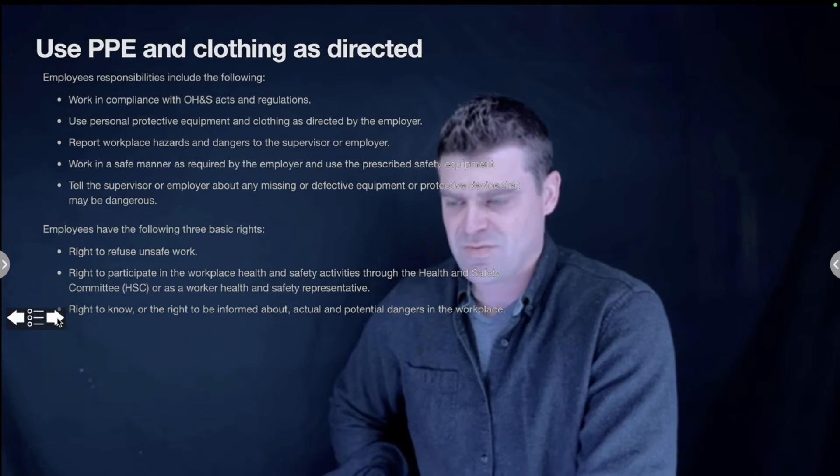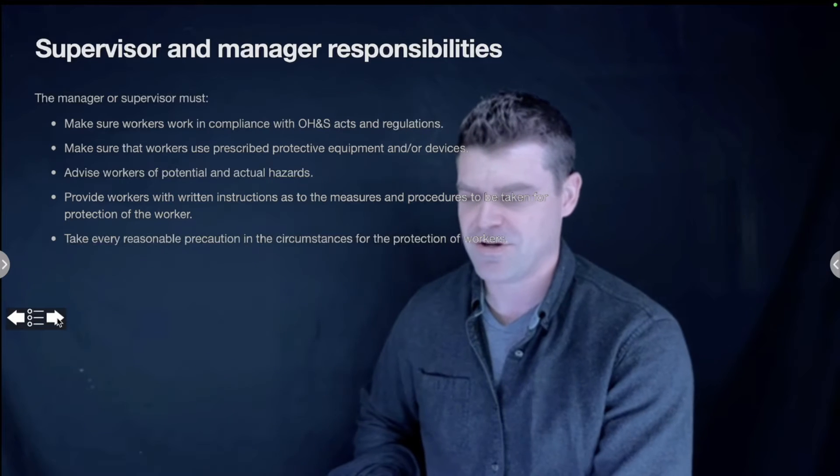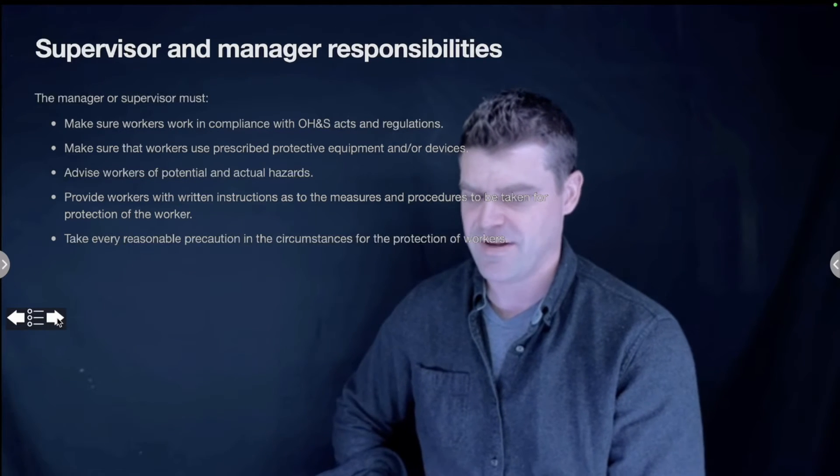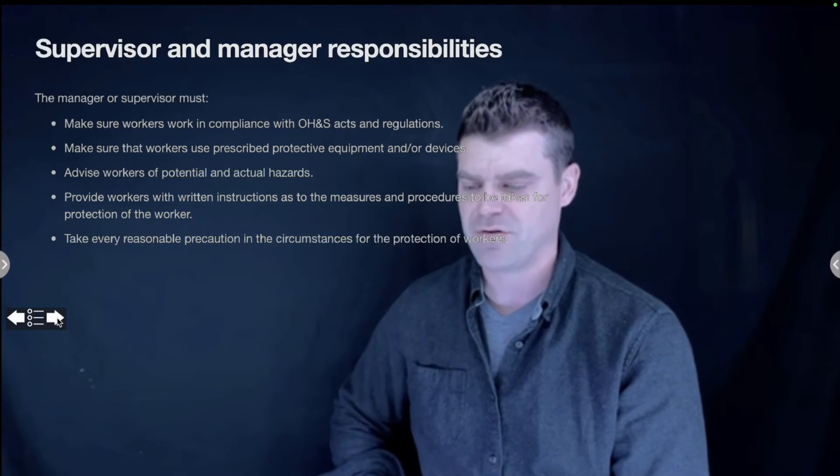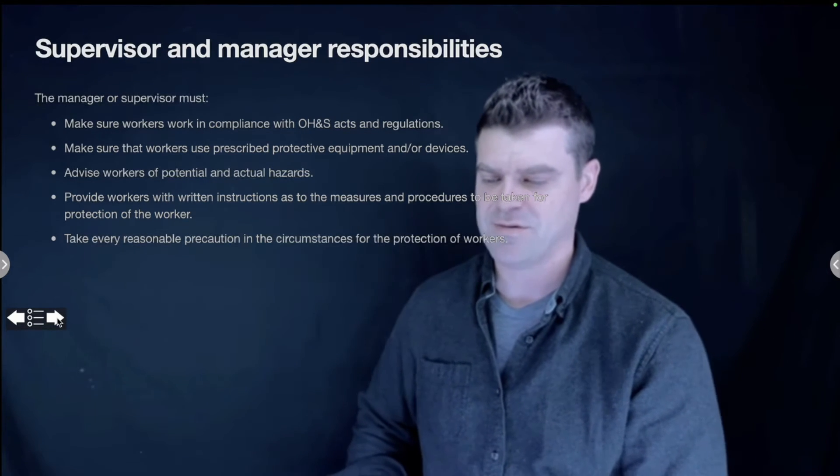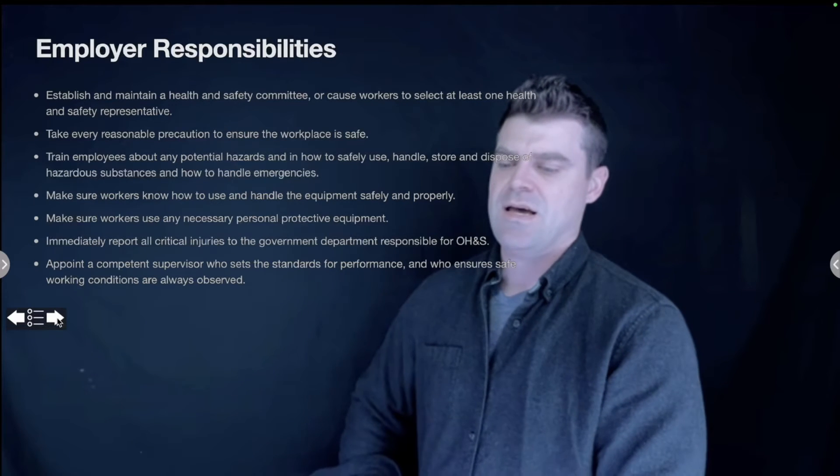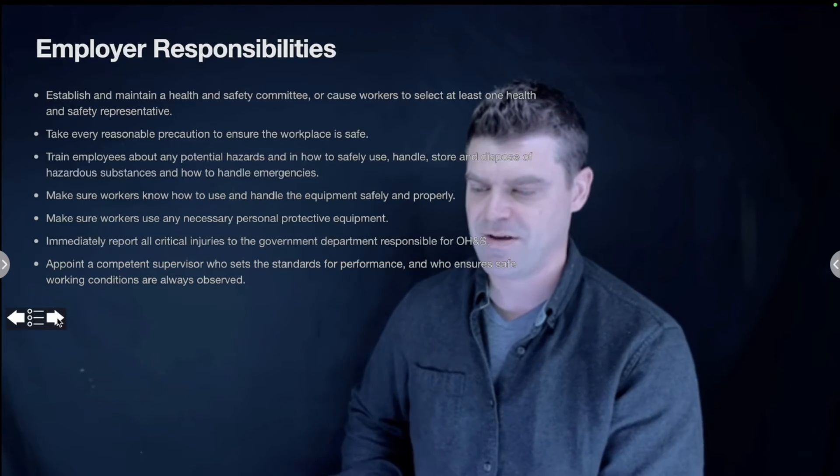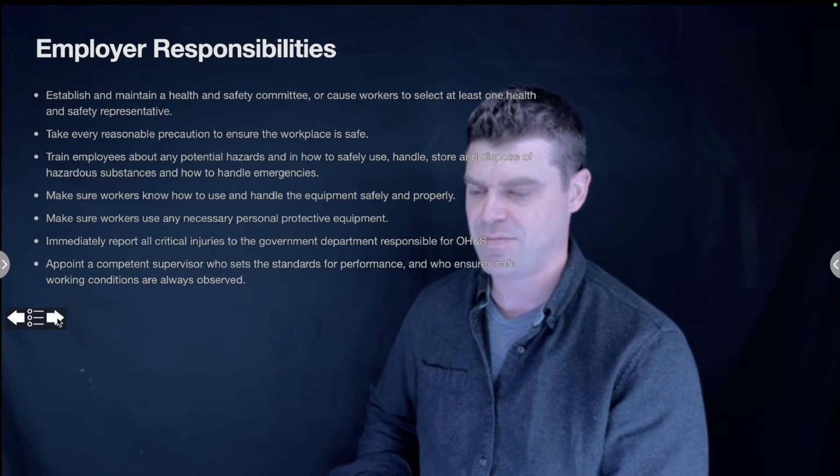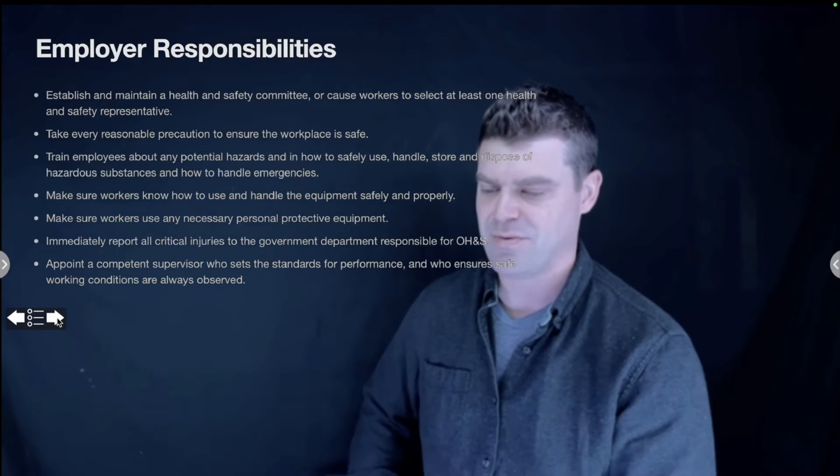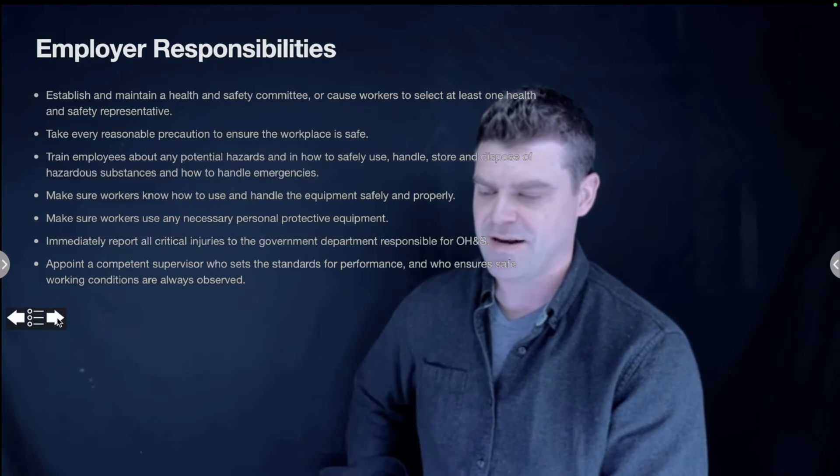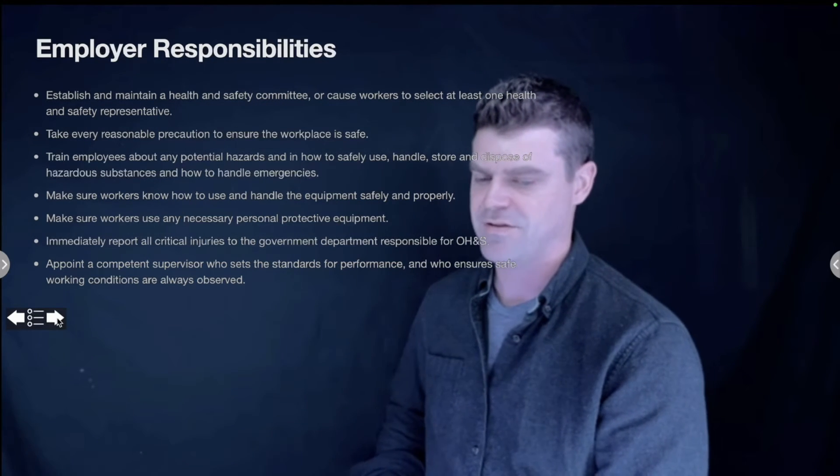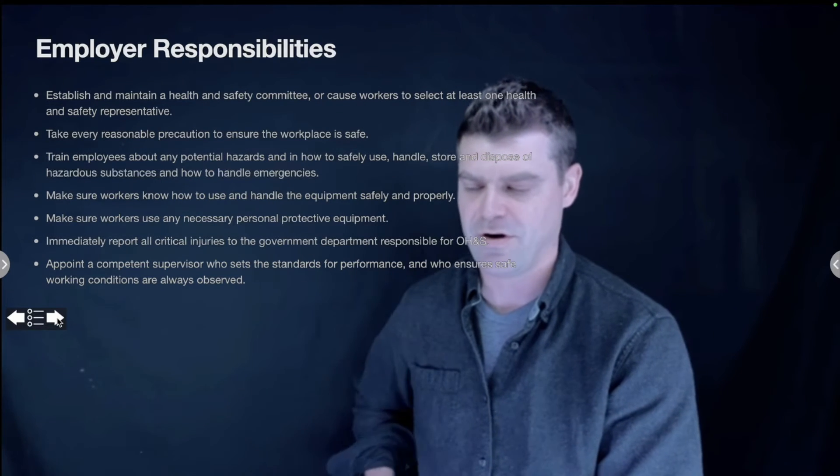While we're on the subject, let's look at what a supervisor's responsibilities are. They have to make sure that workers are working in compliance, that they're using prescribed PPE, and advise workers of any potential hazards. They have to provide workers with written instructions and workplace procedures, and take every reasonable precaution to make sure that workers are safe. Employers need to establish and maintain their health and safety committee, take every reasonable precaution to ensure the workplace is safe, train employees, make sure they know how to handle equipment safely and properly, make sure workers use any necessary PPE, immediately report all injuries, and appoint a competent supervisor to make sure that everything is going smoothly according to regulations and policies. That's the three different categories: worker, supervisor, and employer responsibilities.